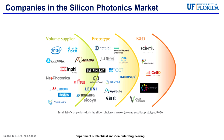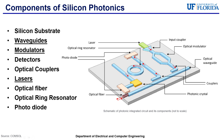Moving forward to the components of silicon photonics. In silicon photonics, photonic integrated circuits, also known as PICs, have quite the selection of components, ranging from the silicon substrate itself, waveguides, modulators, detectors, optical couplers, lasers, optical fibers, optical ring resonators, and photodiodes, all shown in the figure. I will be going more in-depth with some of the more significant components of silicon photonics technology, such as waveguides, modulators, and lasers.